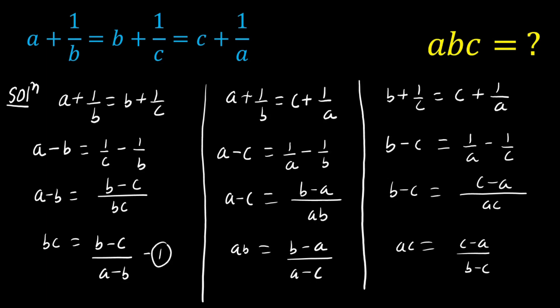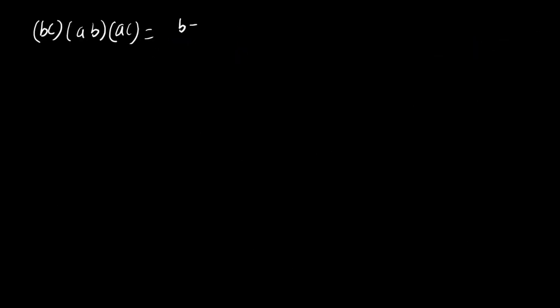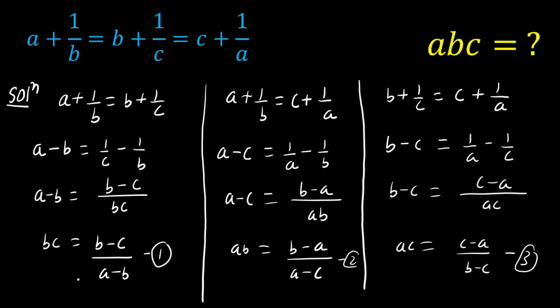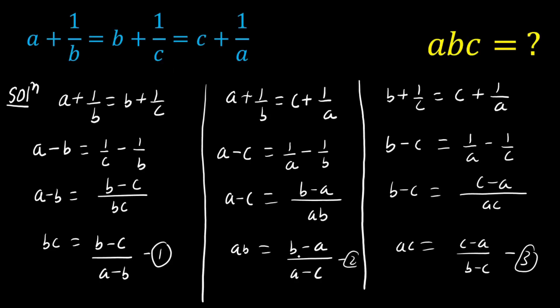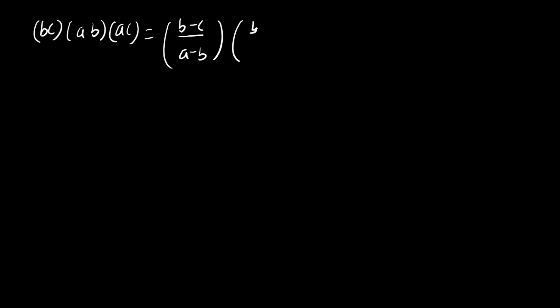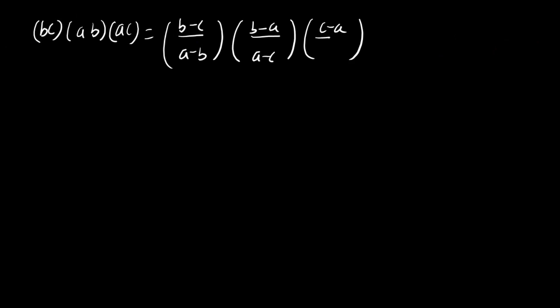Now if we multiply all three equations together, on the left hand side we have b times c, times a times b, times a times c. On the right hand side we have (b minus c) over (a minus b), multiplied by (b minus a) over (a minus c), multiplied by (c minus a) over (b minus c).